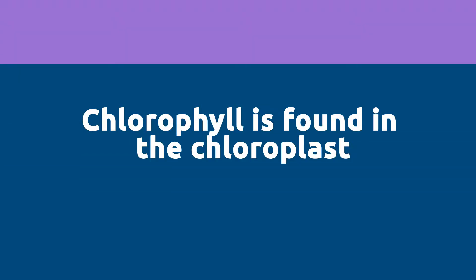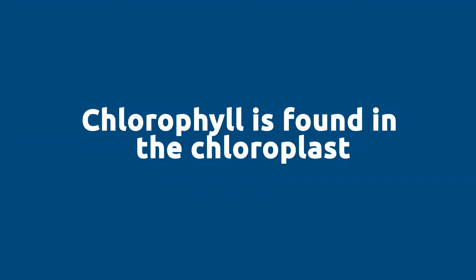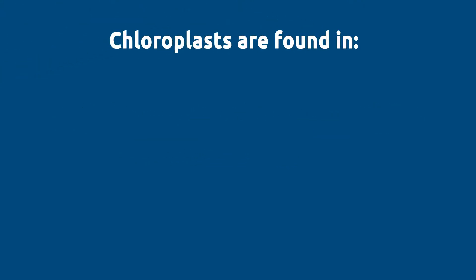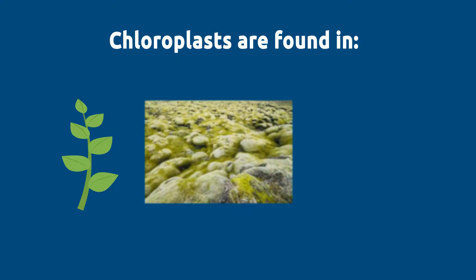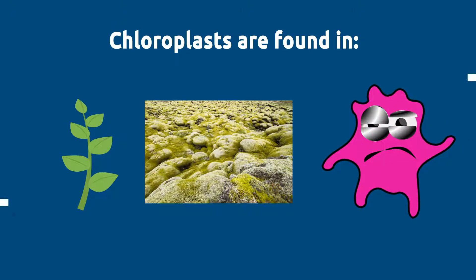This green pigment, called chlorophyll, is found in an organelle called the chloroplast. Chloroplasts are found in plants, algae, and even in some bacterial cells.